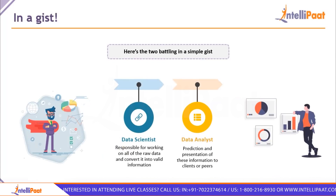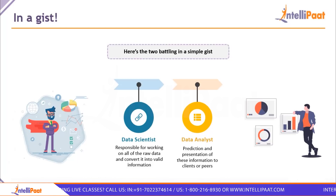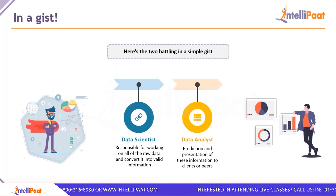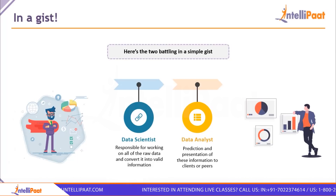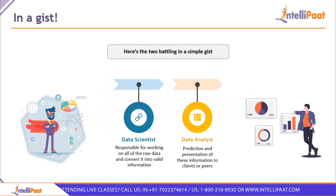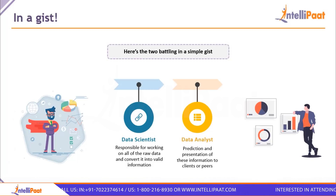To summarize: a data scientist is responsible for working with raw data and converting it into valid information. A data analyst performs predictions and presents that information to clients and peers. When a data scientist hands off large numbers to a data analyst, the analyst converts those numbers into graphs, pie charts, and visuals — because part of the data analyst's job is to convince someone who doesn't know the technology about the data being worked on.